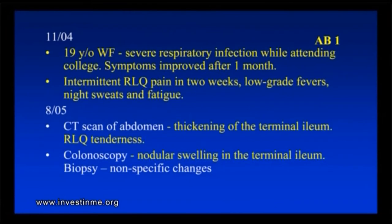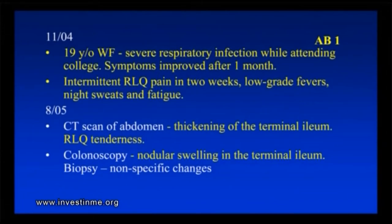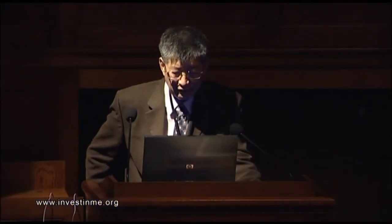That's how we clinicians understand an illness. Before I understood this illness, these symptoms meant nothing to me. The only thing I understood was, okay, you're tired — gather the major criteria, the minor criteria, then you got chronic fatigue syndrome. We forgot about the importance of the initial infection. Now we're starting to understand and recognize that the initial infection is important. This is a history of a 19-year-old white female who developed a severe respiratory infection while attending college. Apparently everybody in the dormitory was sick, and most people's symptoms lasted about a month. The symptoms also included intermittent right lower quadrant pain — where the appendix is — about two weeks after the respiratory infection.